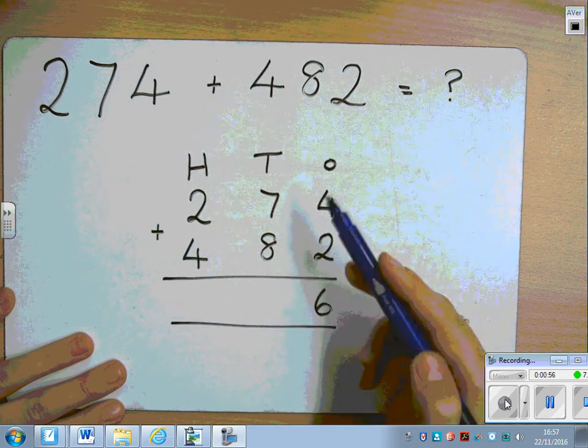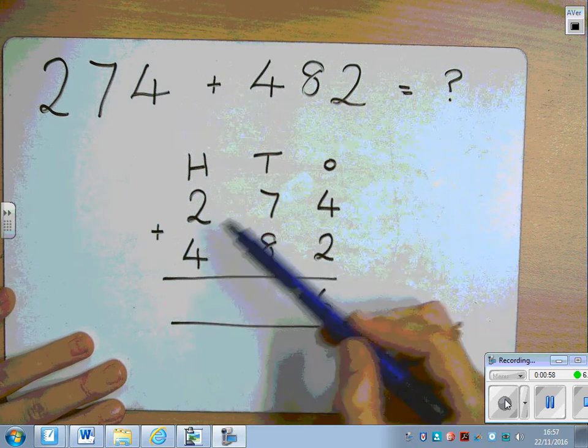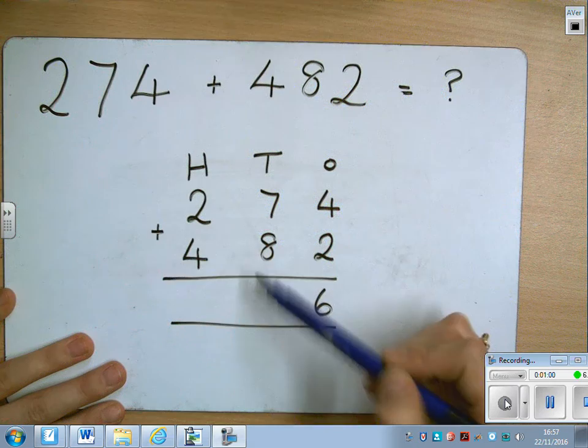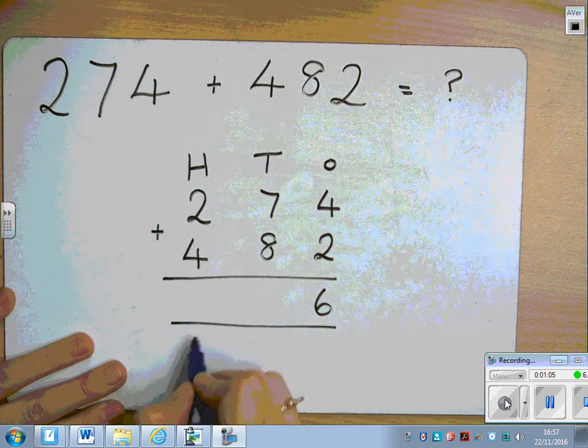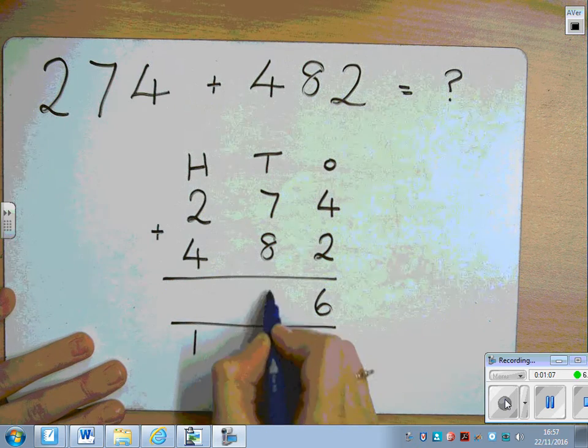Then for our tens, we have seven tens plus eight tens, which is fifteen tens. That is over ten tens, which makes one hundred and five tens.